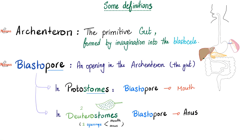You know the gut — the GI tract. Where did it come from? Something called the archenteron. How did it come to be? It came when we invaginated the blastocele. Another definition: blastopore. 'Blast' means immature; 'pore' means a hole or opening. It's an opening in the archenteron — an opening in your gut. You have two openings: the mouth and the anus. In humans, the blastopore will give the anus. But in protostomes — organisms with only one orifice — the blastopore gives the mouth. The mouth in humans comes from the stomodeum.